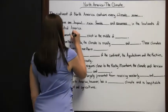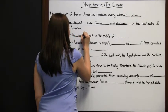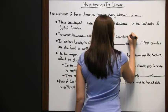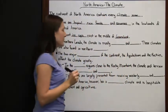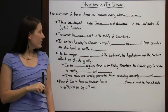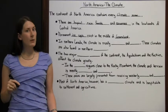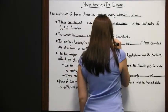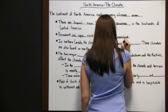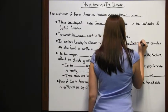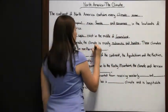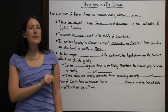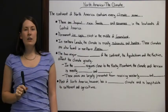Permanent ice caps exist in the middle of Greenland, meaning there is ice there that never melts because temperatures stay so cold. In Northern Canada, which is also a cold area, the climate is mostly subarctic and tundra. These climates are also found in Northern Alaska, in the northern areas that are cold but not quite as cold as the ice caps.